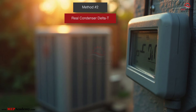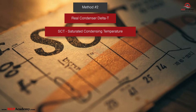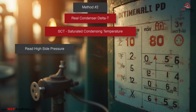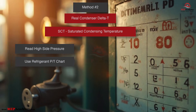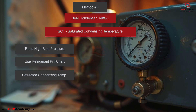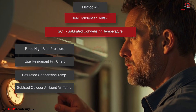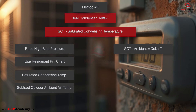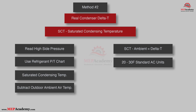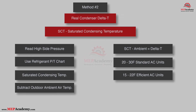Method number two: real condenser TD. SCT — saturated condensing temperature — is determined by reading the high side pressure on your gauge manifold and converting that pressure to a temperature using the refrigerant's PT chart. You hook up your high side gauge, read the pressure, convert to saturated condensing temperature using a PT chart or app, then subtract the entering ambient air temperature. SCT minus ambient equals condenser temperature difference TD. Typical numbers: 20 to 30°F on standard units, 15 to 22°F on high efficiency equipment. Takes two to three minutes and a set of gauges. This tells you the refrigerant's saturation temperature inside the condenser coil — it's a refrigerant thermodynamics measurement, not an airflow measurement.